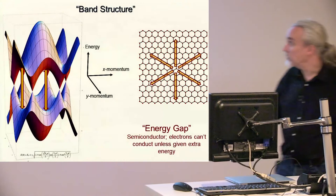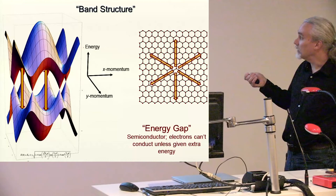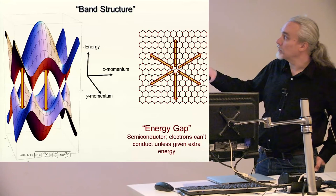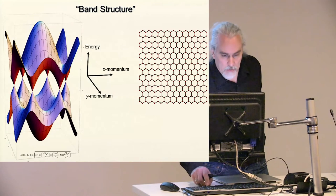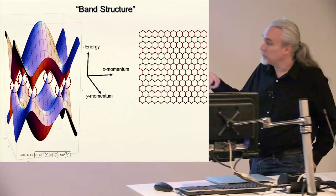For other directions, there's what we call a band gap—this energy gap is the characteristic of a semiconductor. Electrons can't conduct there unless they're given extra energy to promote electrons down here to unfilled states up here. In those directions, graphene is effectively not conducting.